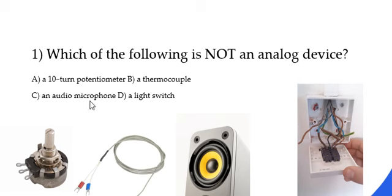So therefore, D, a light switch, is not an analog device. If you think about your light switch, it is not an analog device because it has only two discrete states, and that's on and off.